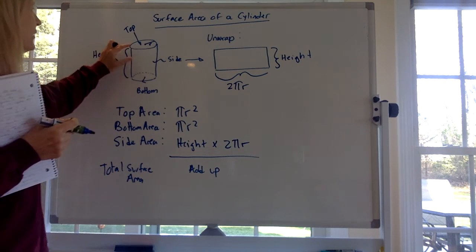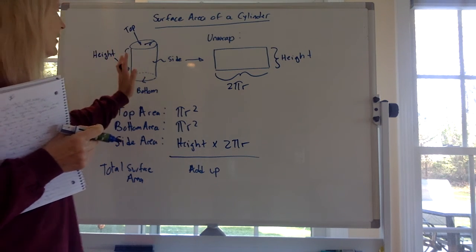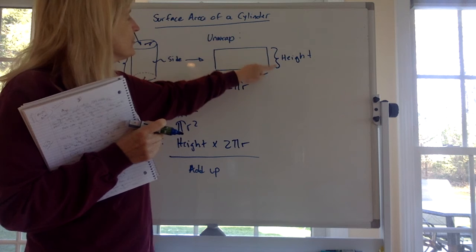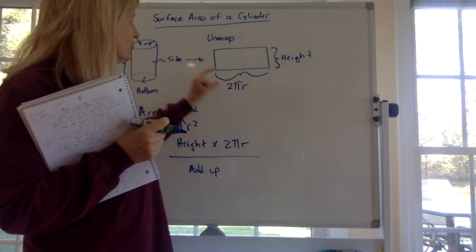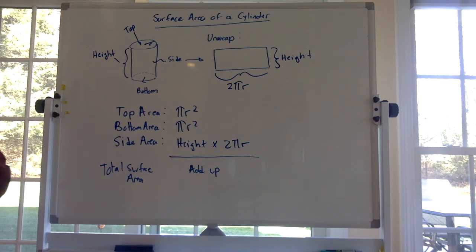So there's a circle area, top and bottom, there's two of those. And then figure out the area on the side by unwrapping it. One dimension is the height, and the other dimension is the circumference, which is 2πr. Add them all up to get the total surface area of the cylinder.